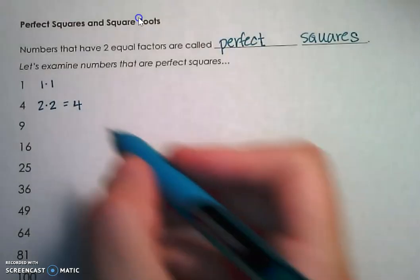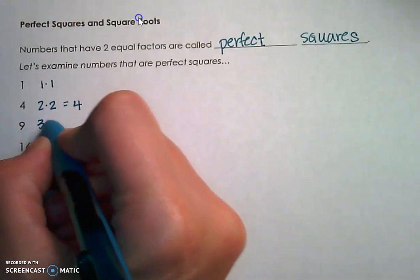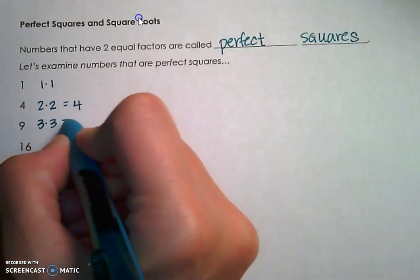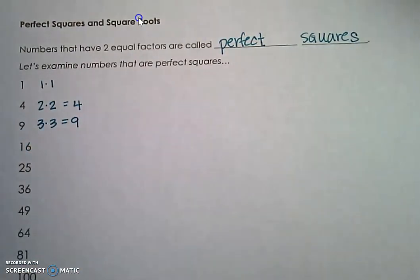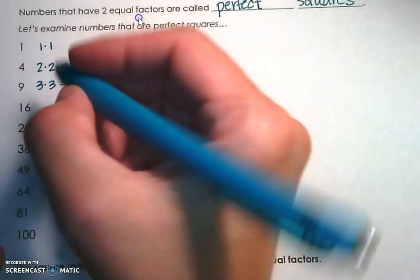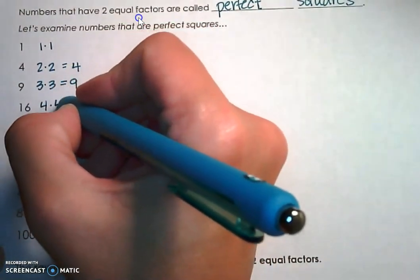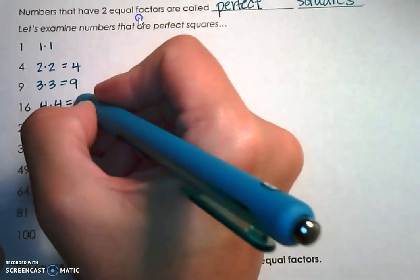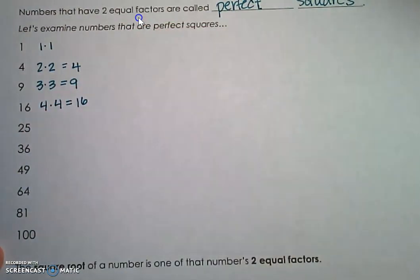9 is a perfect square because 3 times 3 is 9, and those are two equal factors. 16 is a perfect square because 4 times 4 is 16. Now, 16 has other factors — 1 times 16, 2 times 8 — but what makes 16 a perfect square is that it has two equal factors.